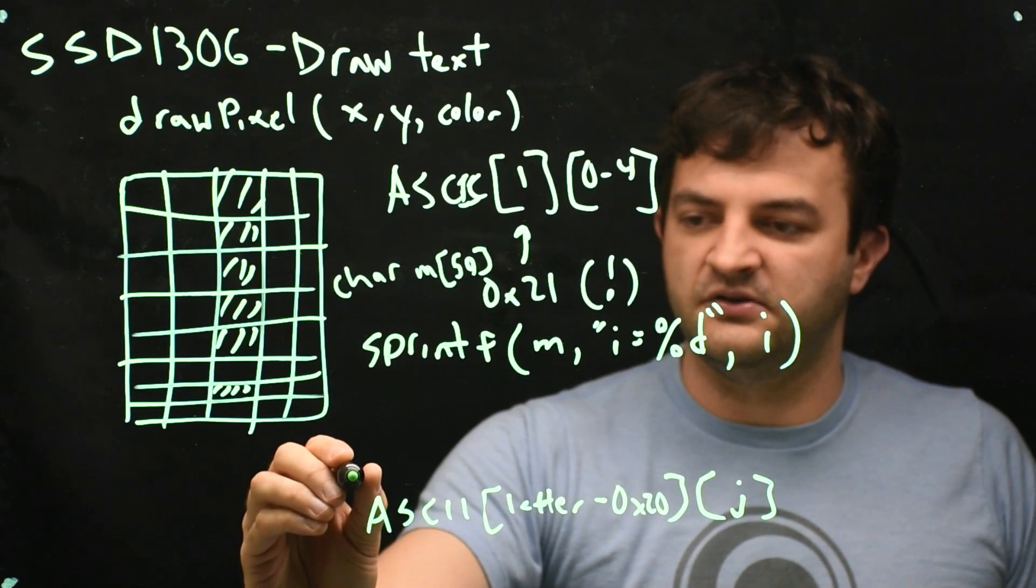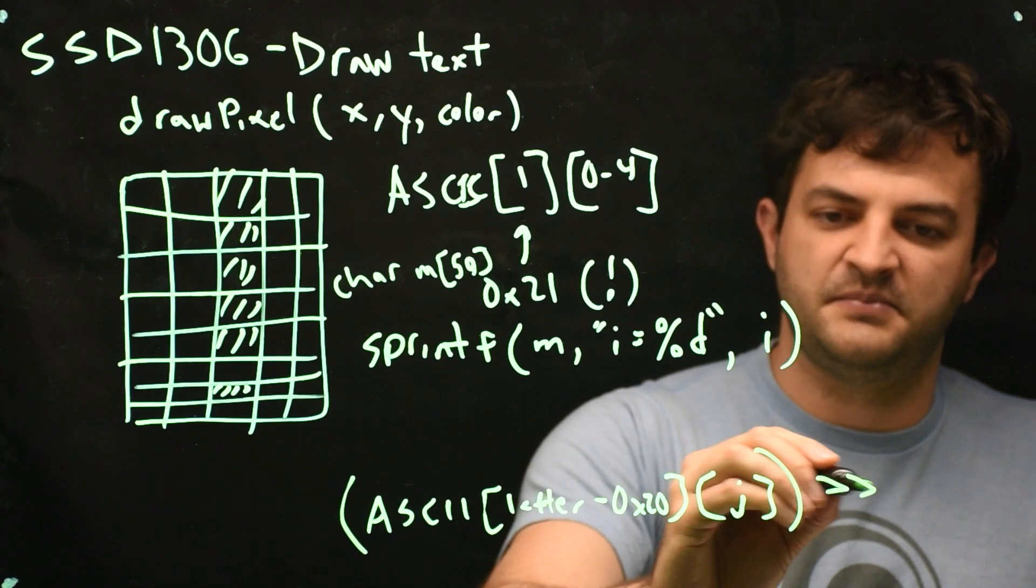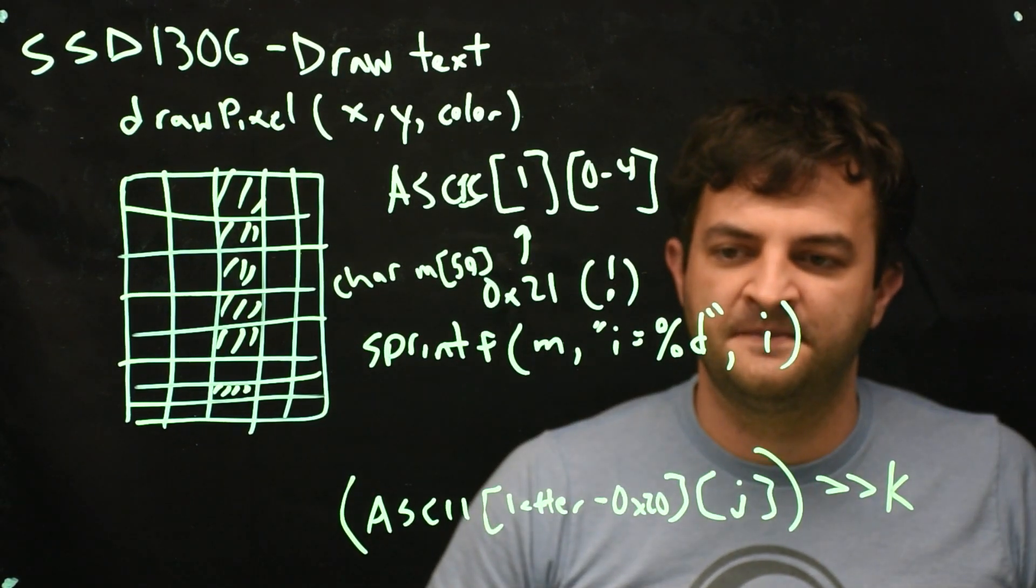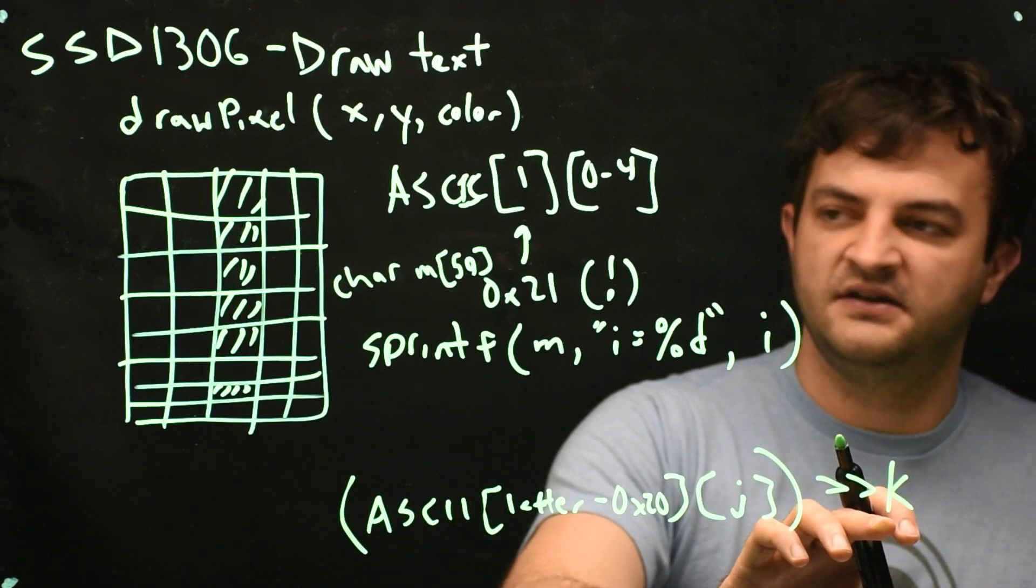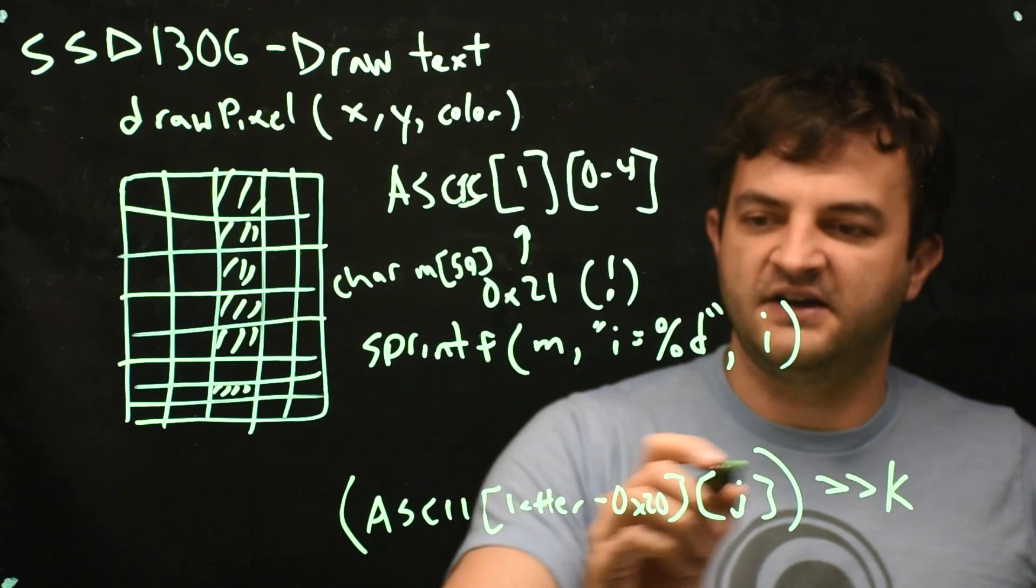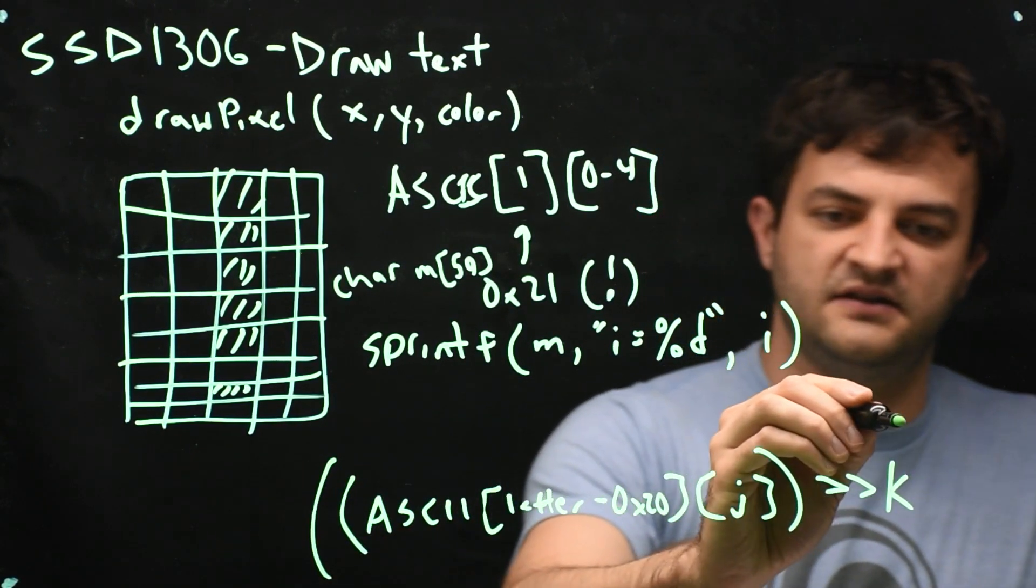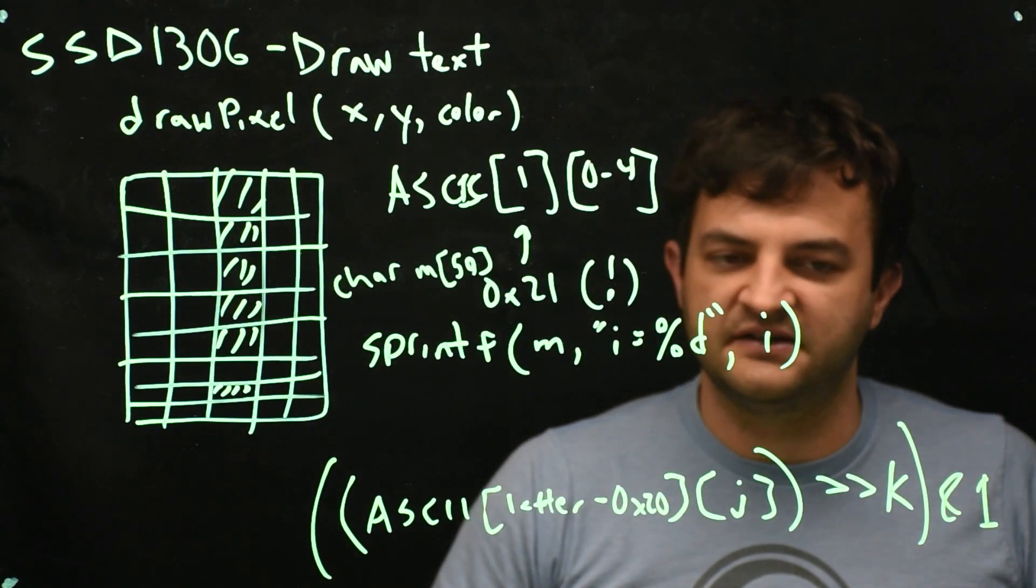So that means I'm going to take this value of ASCII that I have, and I'm probably going to be shifting it by some other variable that I'm looping over. Maybe that's called k. So I'll loop k from 0 to 7. And every time I will shift over by 1, I will probably need to AND this with 1 so that I only get one of the bits.